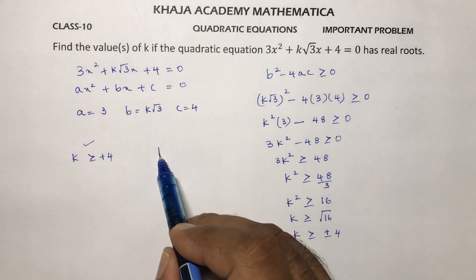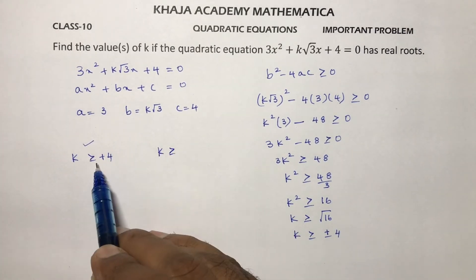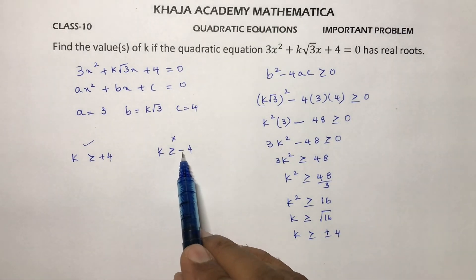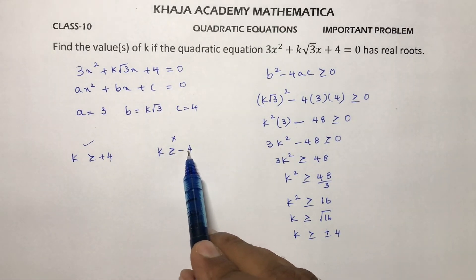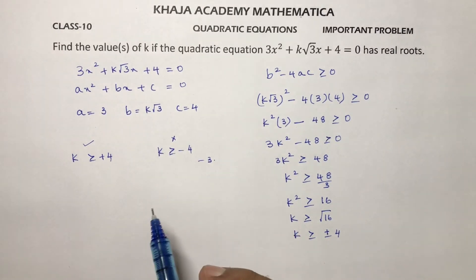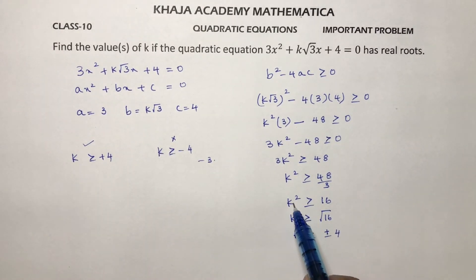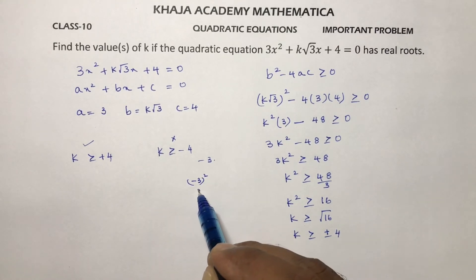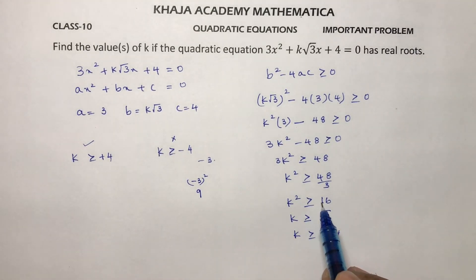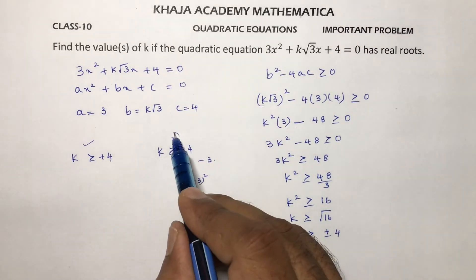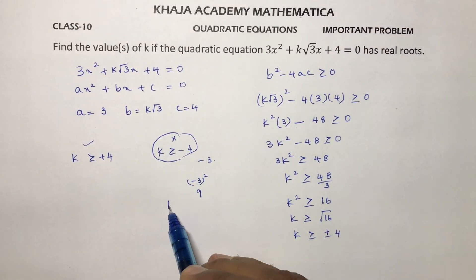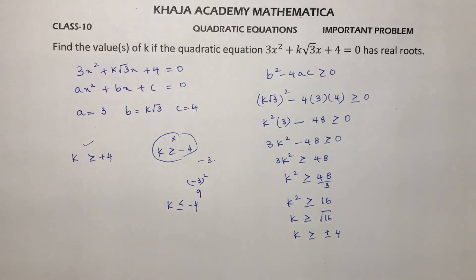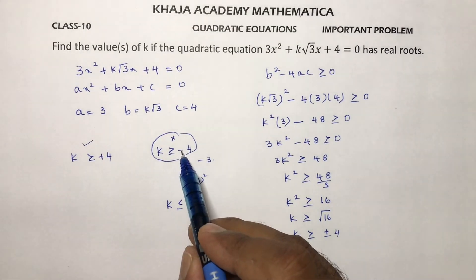However, k > -4 does not satisfy the condition. For example, if k = -3 (which is greater than -4), then (-3)² = 9, and 9 is not greater than or equal to 16. So the correct condition is k ≤ -4.